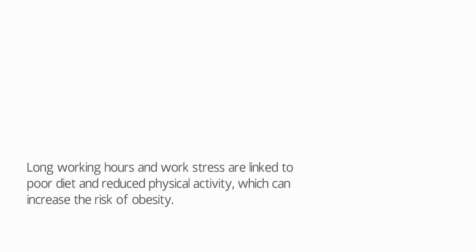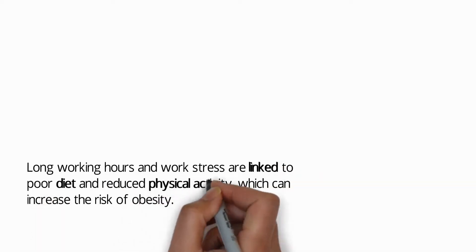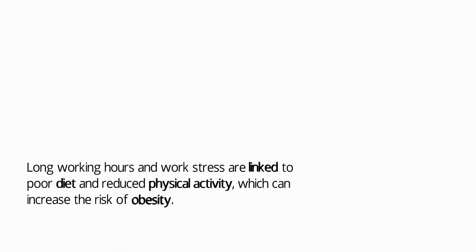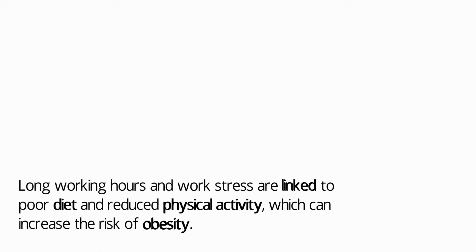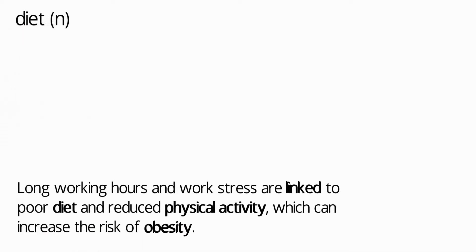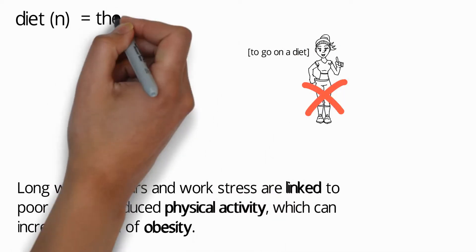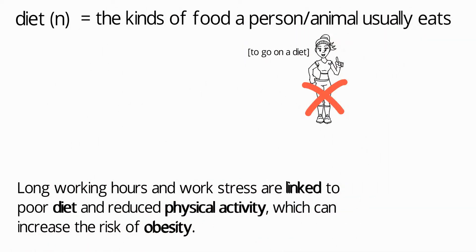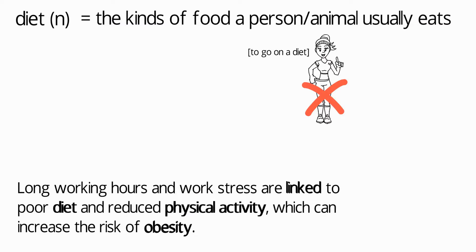We're going to see all the words and phrases in context. Here's the context for the first four words and phrases: 'Long working hours and work stress are linked to poor diet and reduced physical activity, which can increase the risk of obesity.' The first word is 'diet,' and the meaning here is not the common meaning of going on a diet or losing weight. Diet is a word for the kinds of food a person or animal usually eats. The adjective is 'dietary.'